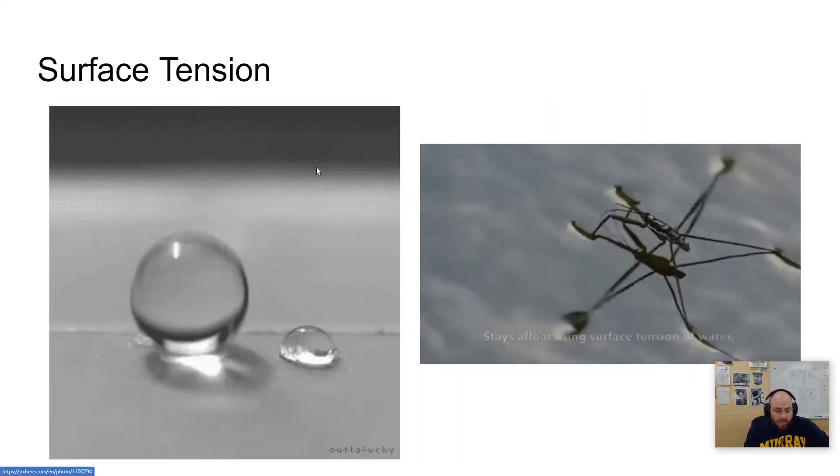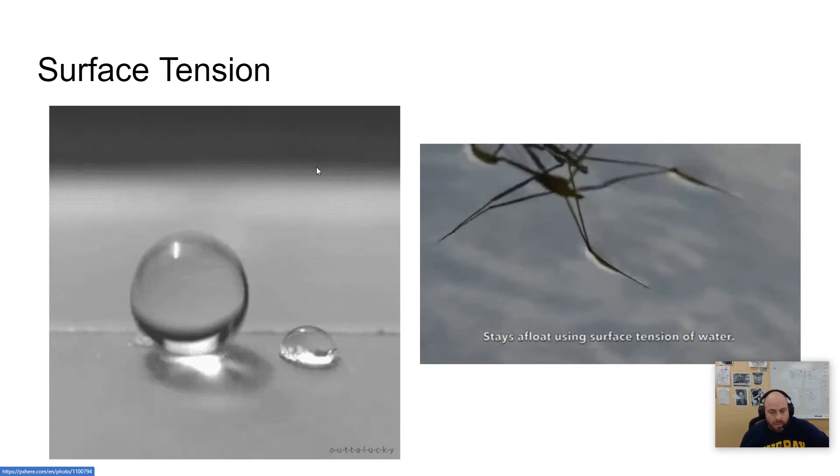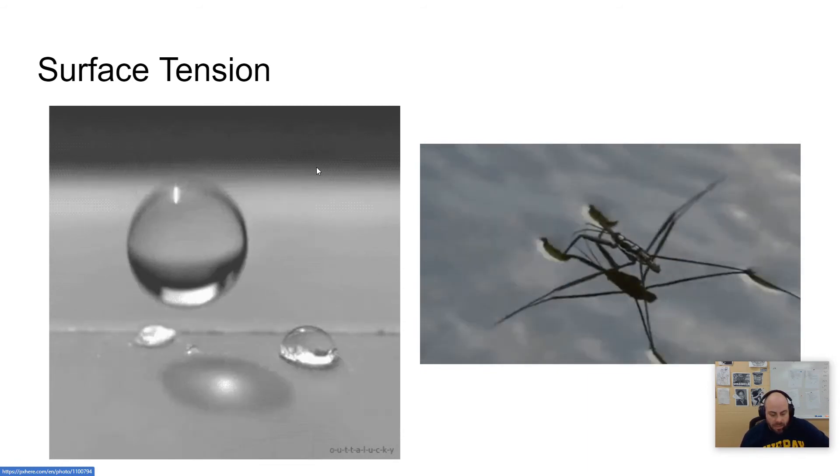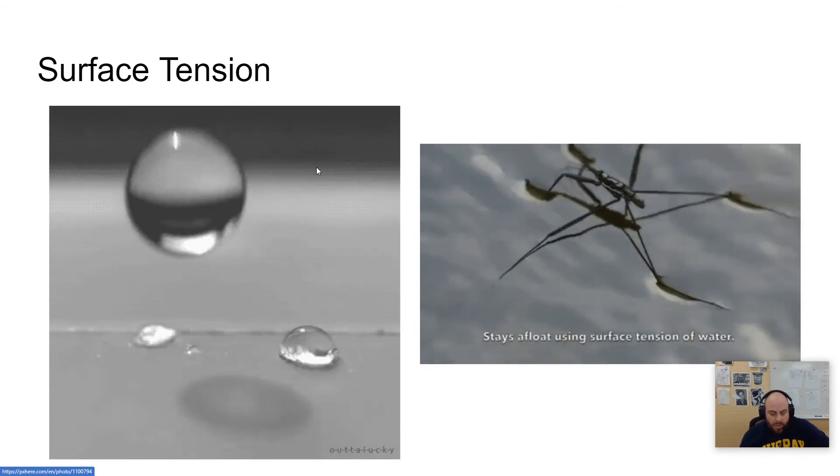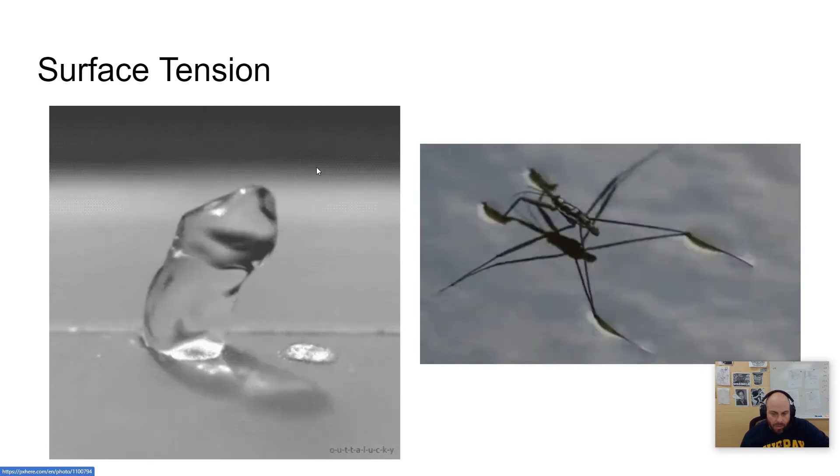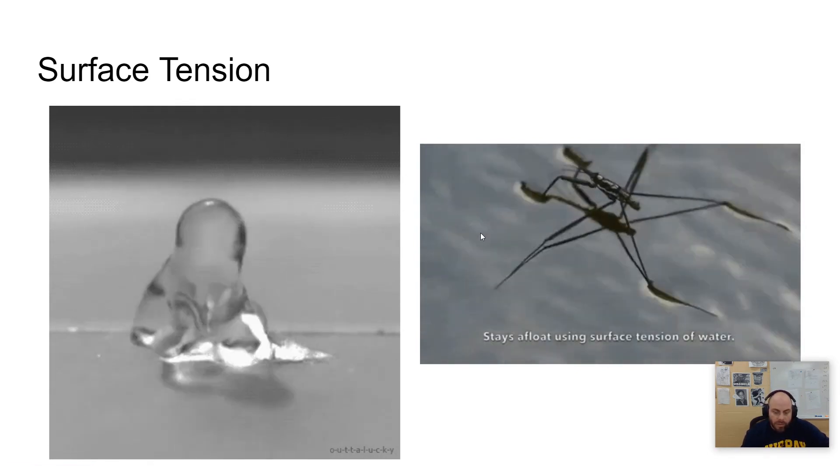One of these is called surface tension. And surface tension basically is this. This is the increased interaction between water molecules that are on the surface of the water.